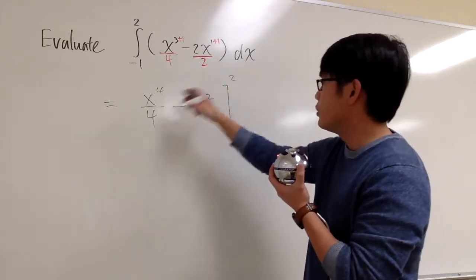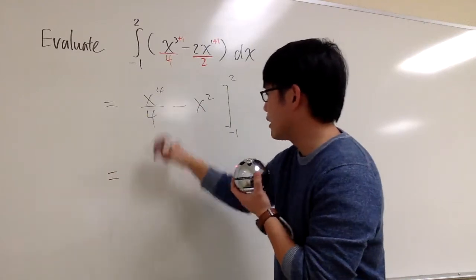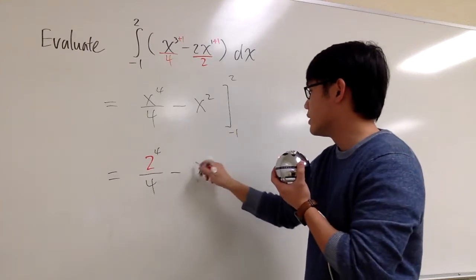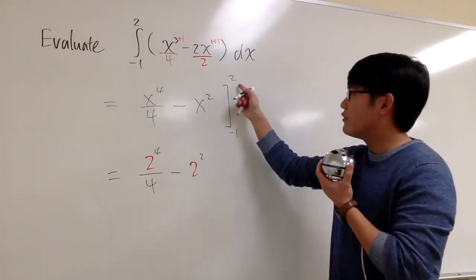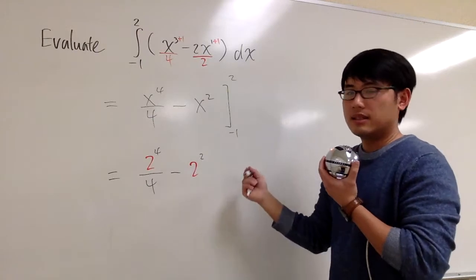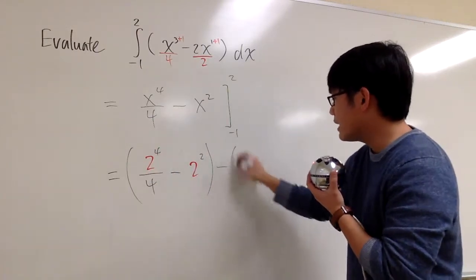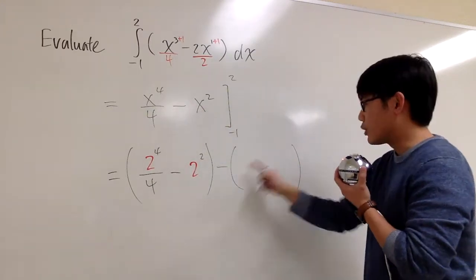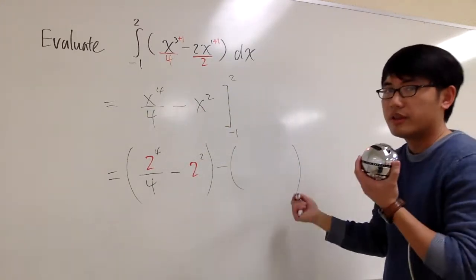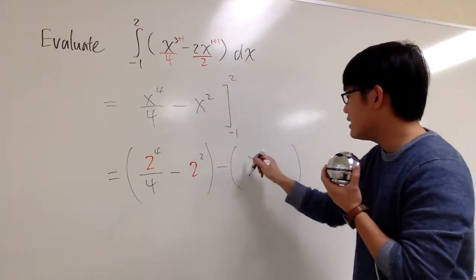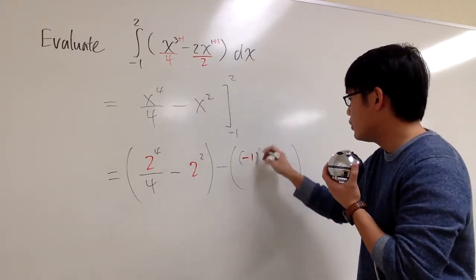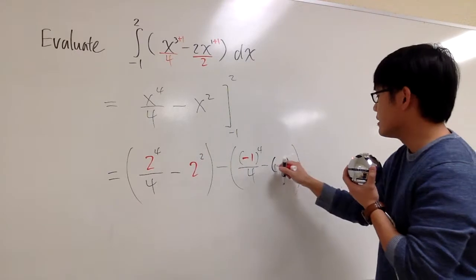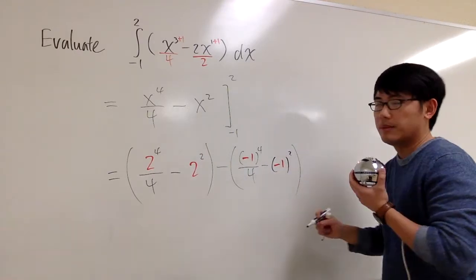Our first job is plugging 2 into all the x. So we are going to get 2 to the fourth power over 4 minus 2 squared. That's the first part after we're plugging 2 into all the x. And then we'll take this, and we are going to subtract when we're plugging negative 1 into all these x. So subtract the whole thing. So use the parentheses accordingly. This will be helpful. We are going to get negative 1 to the fourth power over 4. And we have minus negative 1 into the x. So minus 1 to the second power, like this.